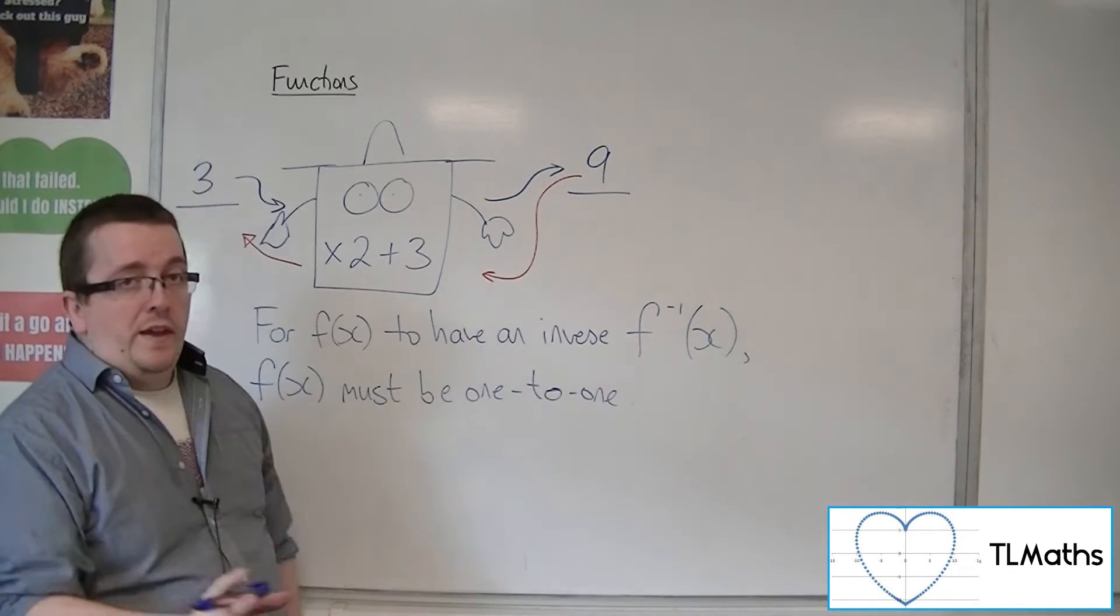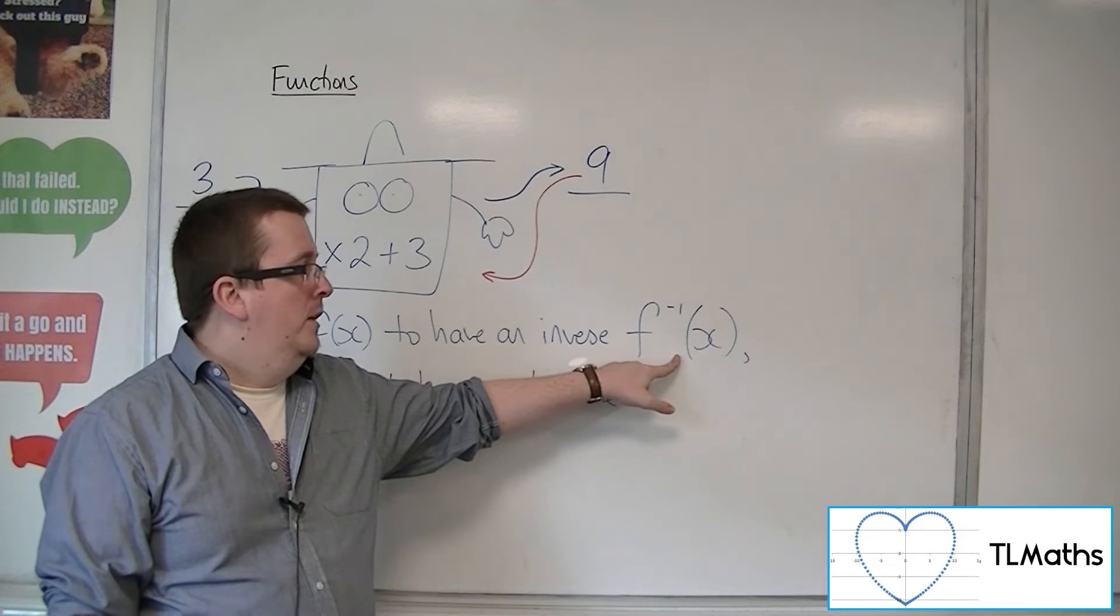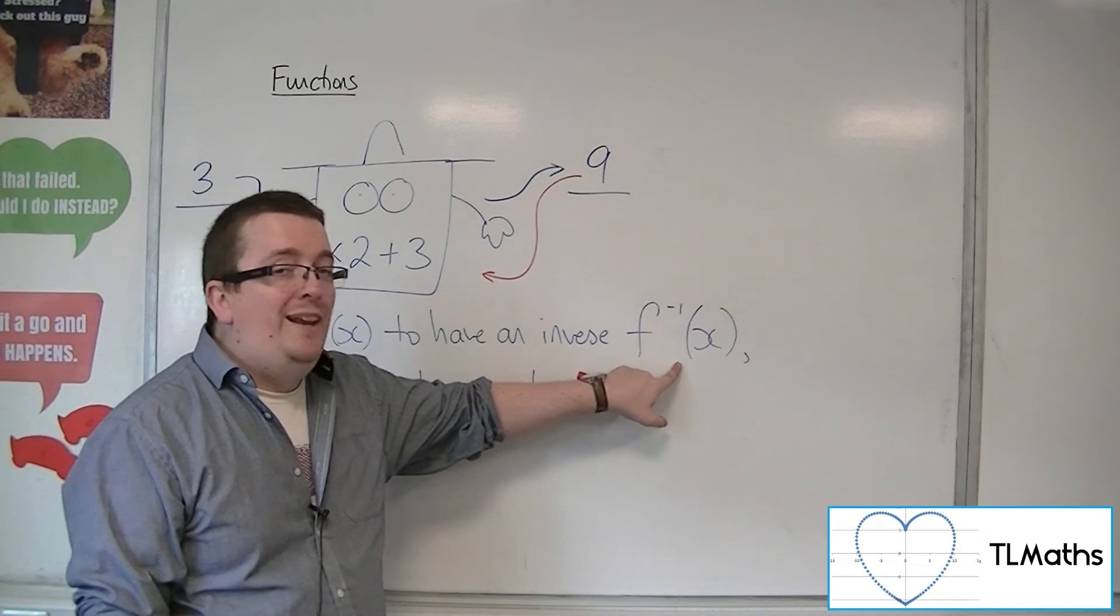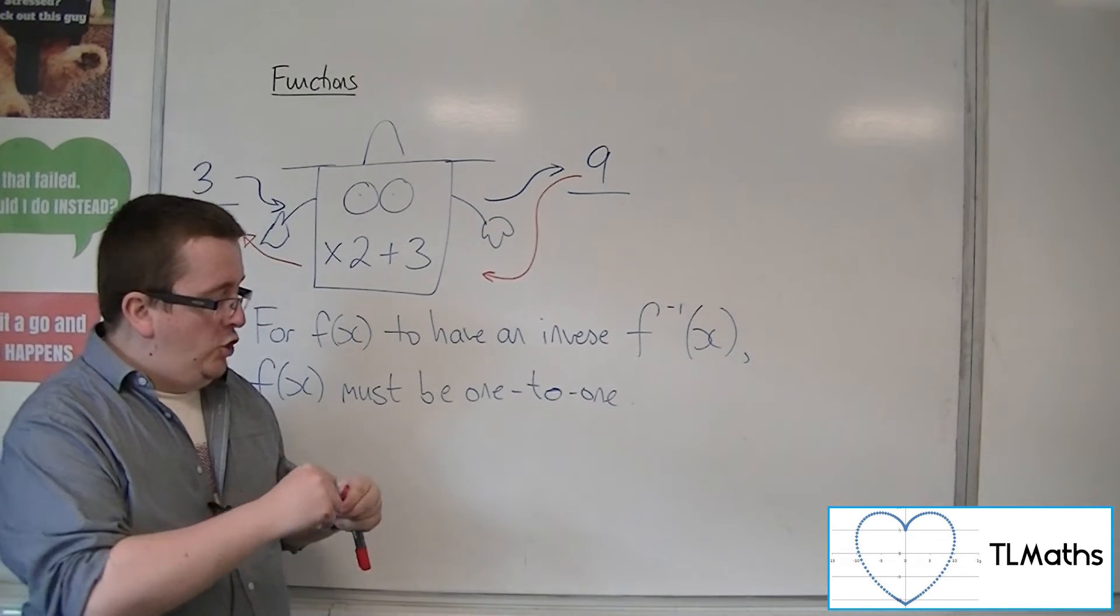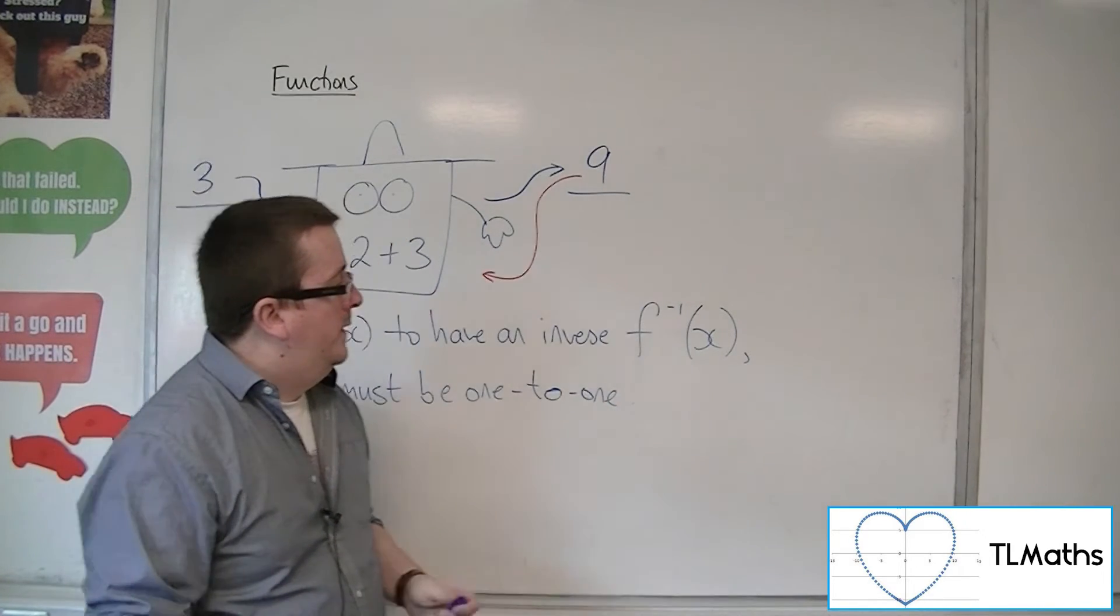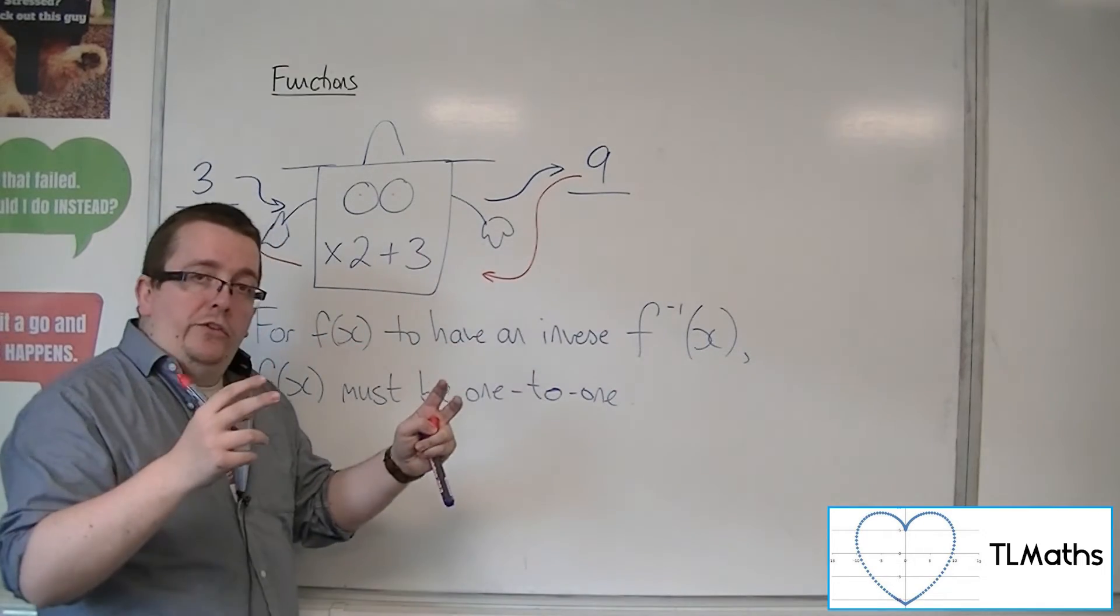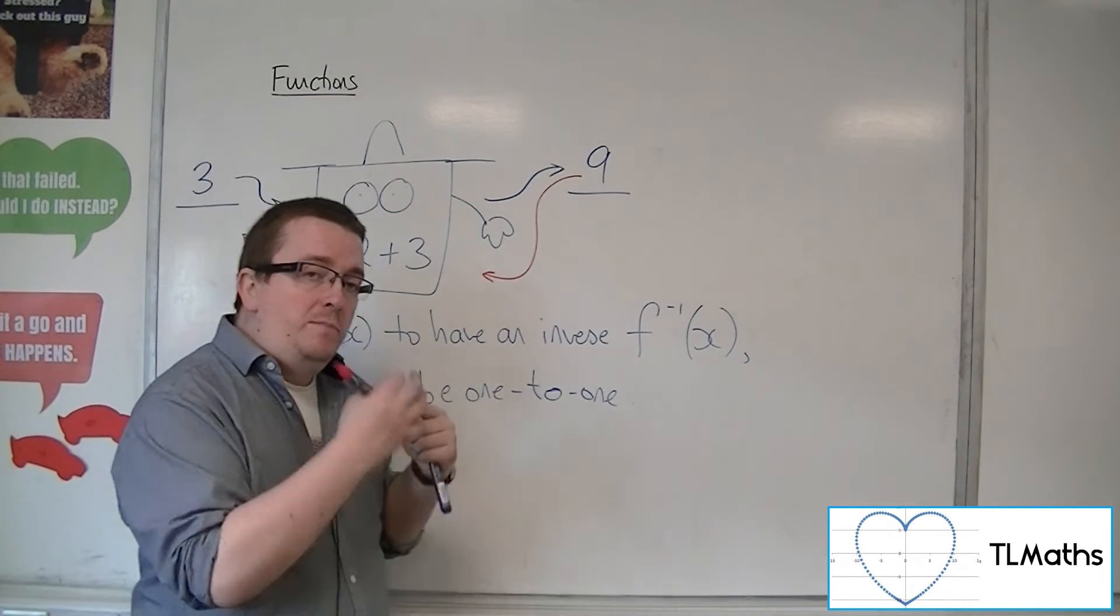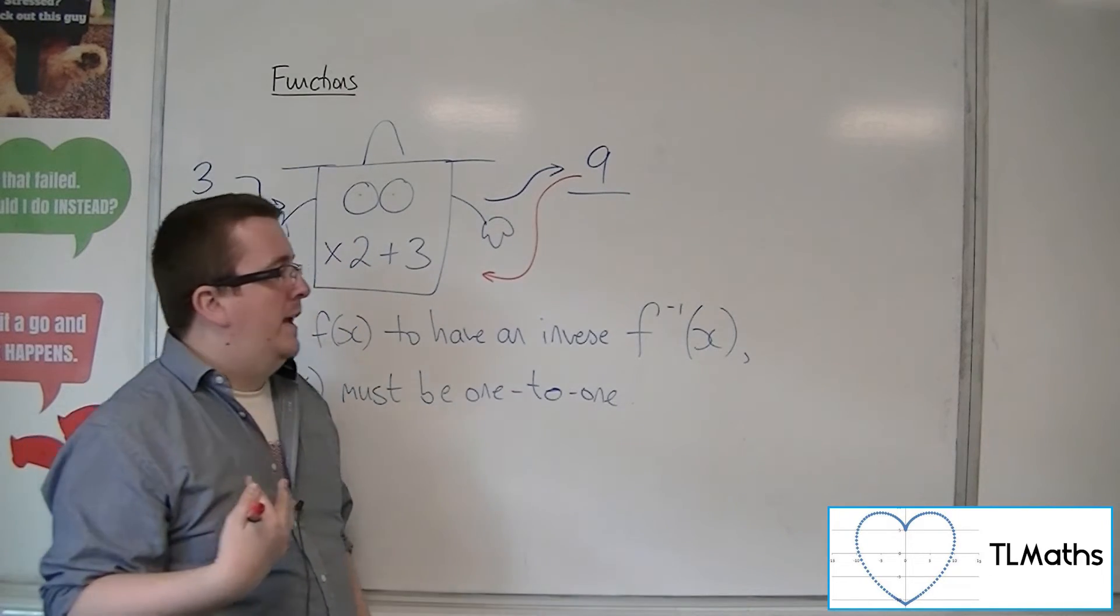Now, two things here. Firstly, the notation. The notation leaves a lot to be desired. This is the notation for the inverse function. This, to the power of minus 1 that's going on here, you must make sure you don't get confused with it being 1 over.